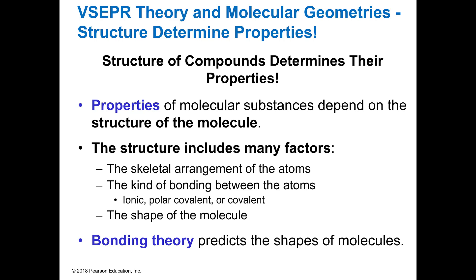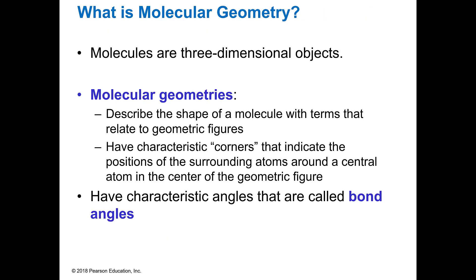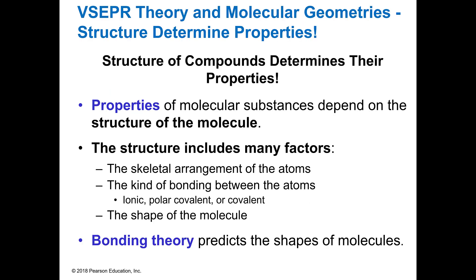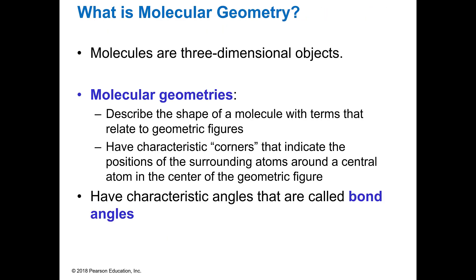And so bonding theory is what we use to predict the shape of molecules. And we call it VSEPR. It's V-S-E-P-R, but we call it VSEPR because it's just easier to say. So when you see this, this is where we're going to be doing the three-dimensional shapes.